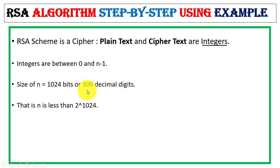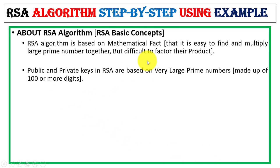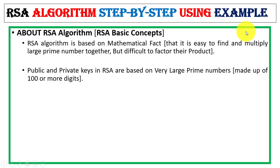In decimal, n is approximately 309 digits, so the value for n is less than 2 raised to the power of the key size. RSA algorithm is based on the fact that it is easy to find and multiply large prime numbers together, but it is extremely difficult to factor their product. That basic concept is what RSA is built on — easy multiplication of large primes but difficulty in factoring their product — which makes RSA secure against attackers.